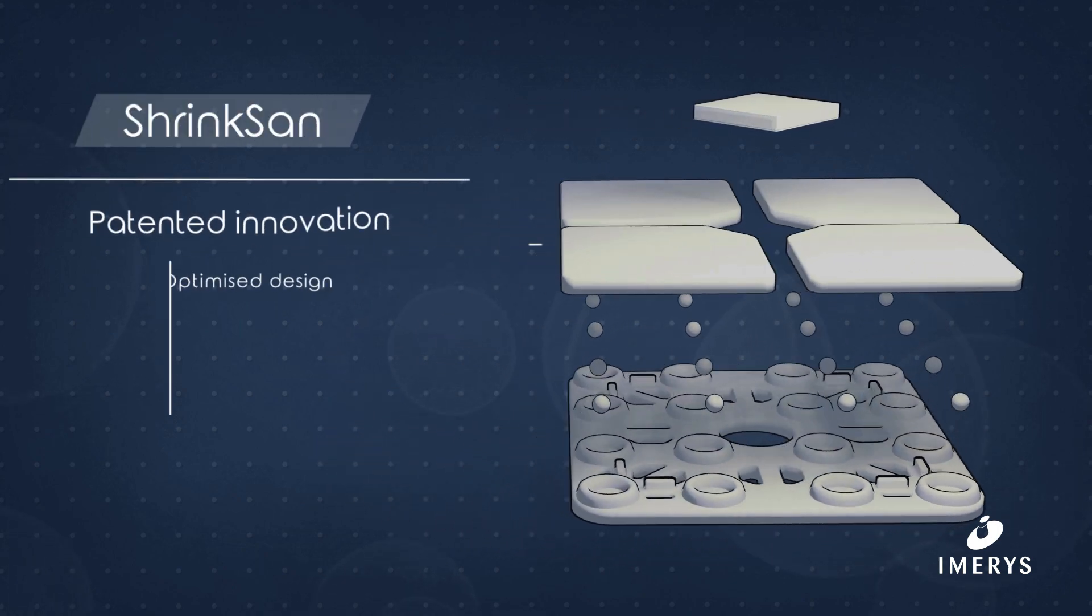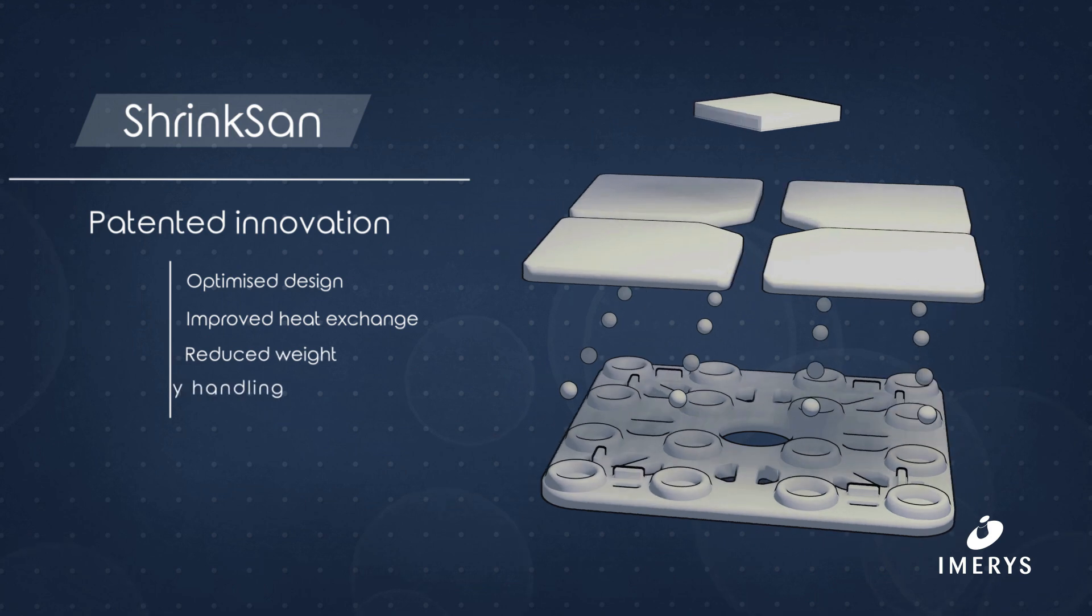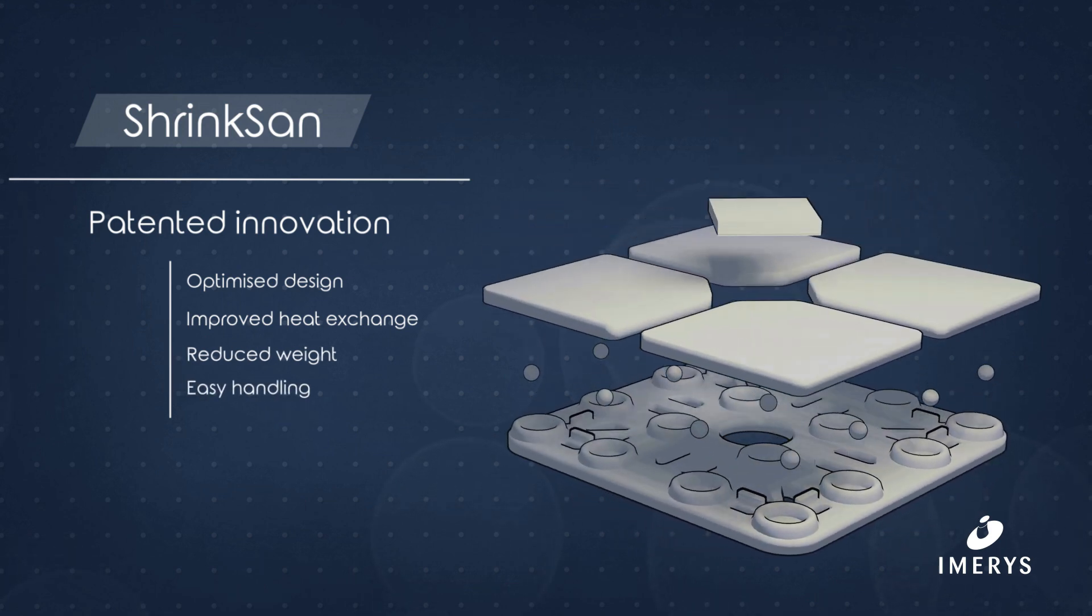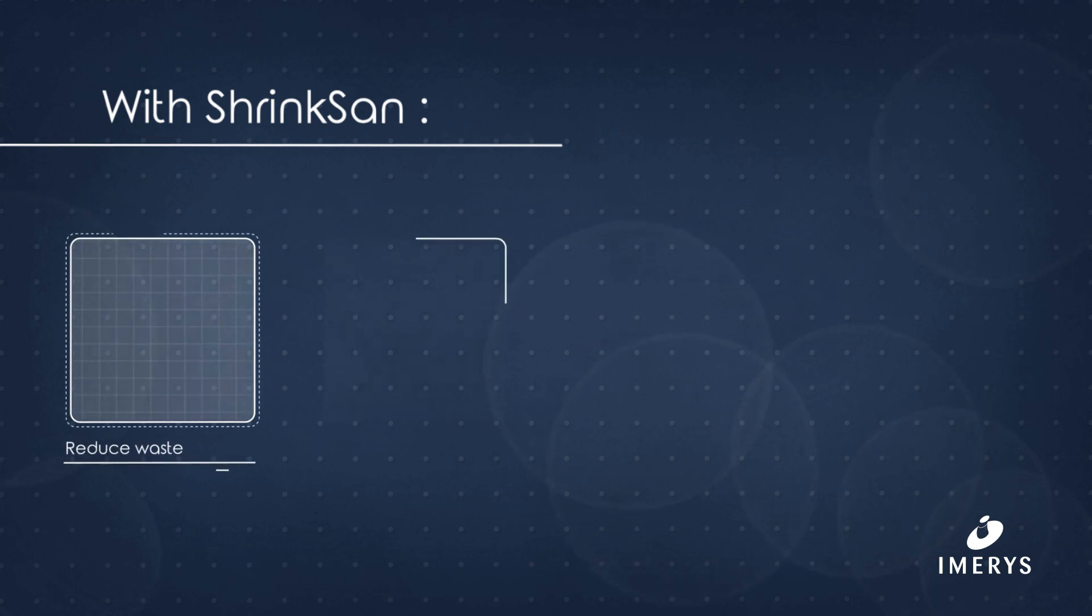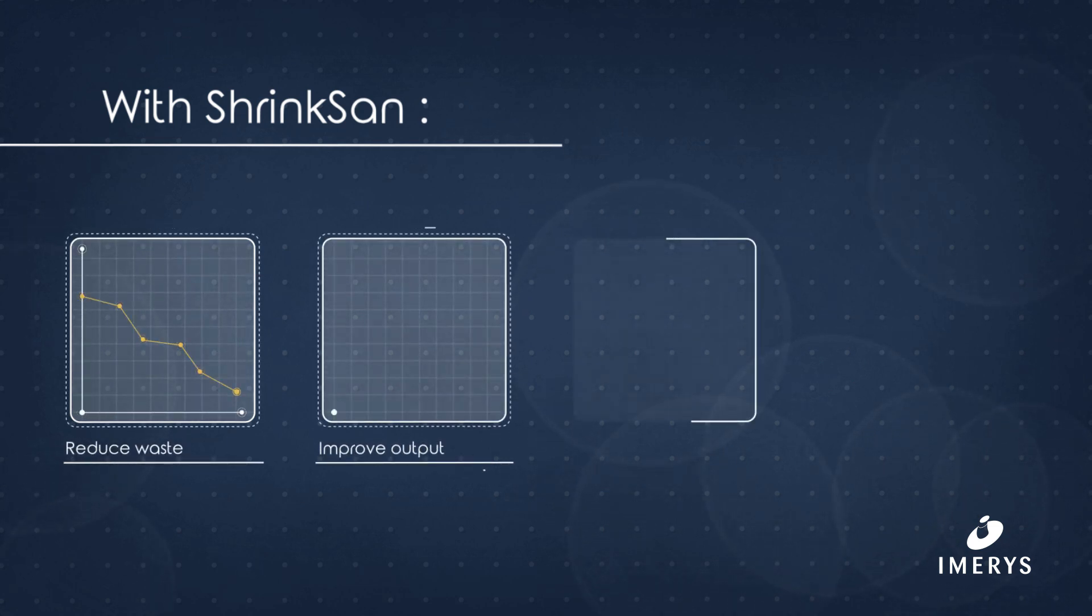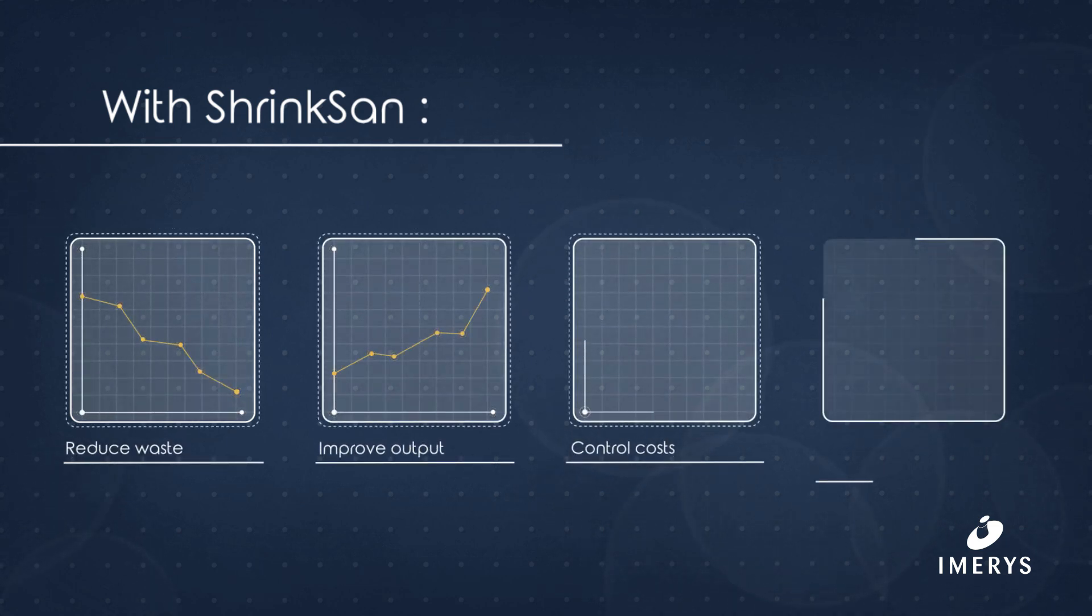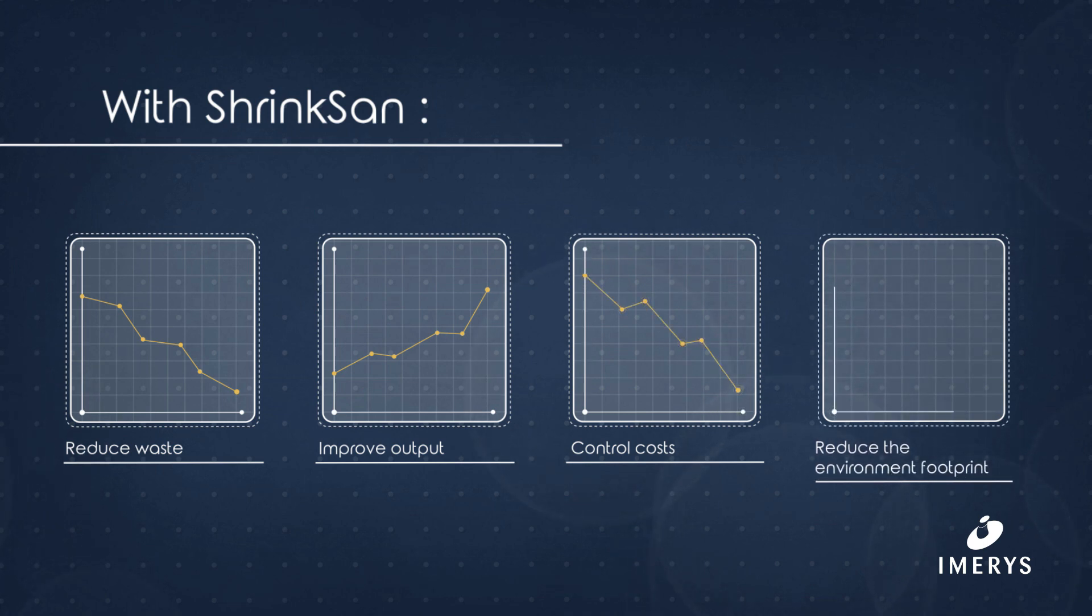ShrinkSan is a patented innovation to which we have made successive improvements to enhance its performance and durability. In short, ShrinkSan is based on a technology that lowers costs and improves output while significantly reducing the environmental footprint of sanitary ware production.